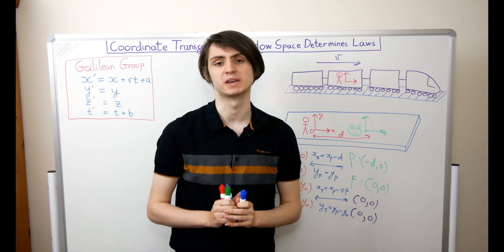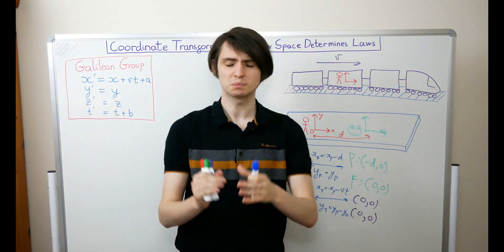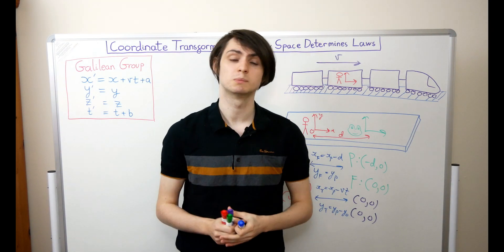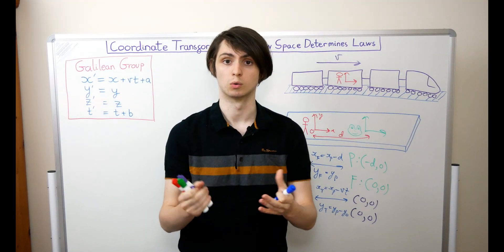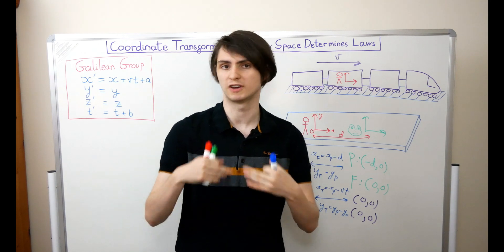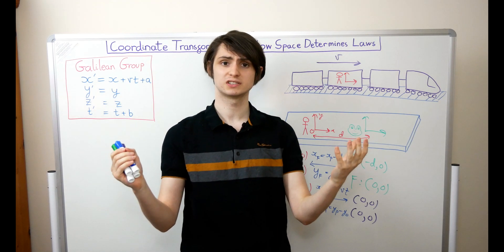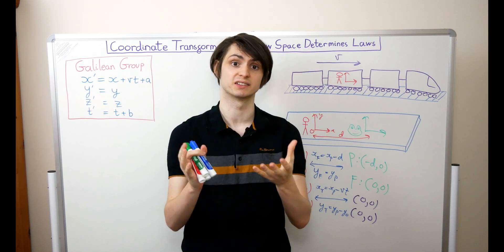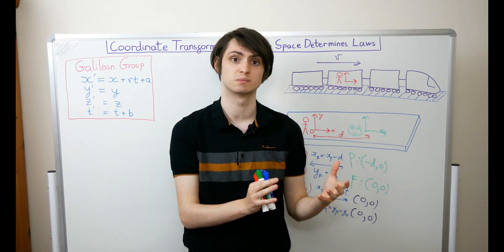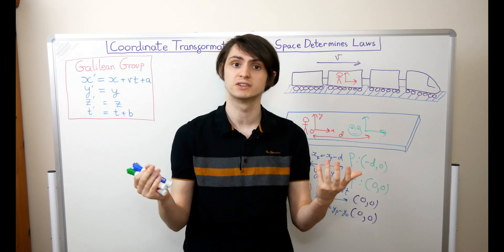Now we'll consider something more interesting. In the last video we talked about a special set of frames called inertial frames — a small subset of all possible frames. All inertial frames are frames, but not all frames are inertial ones. An inertial frame in Newtonian mechanics is simply a frame in which Newton's laws of motion hold. If you're not in an inertial frame, Newton's second law will contain extra terms representing fictitious forces. So a key question is: what kind of coordinate transformations link different inertial frames — transformations that will always take us from one inertial frame to another?